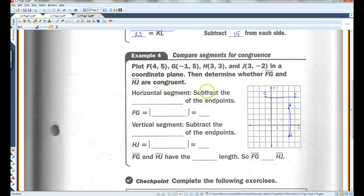The horizontal segment, I'm going to subtract. This is negative 1, and this is 4. So I'm going to subtract the x-coordinates of the endpoints.